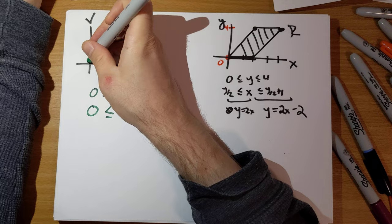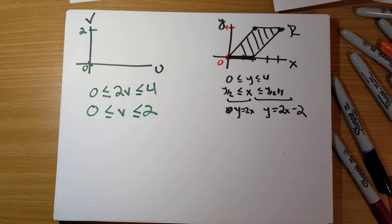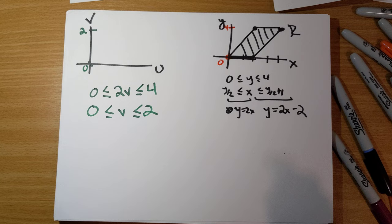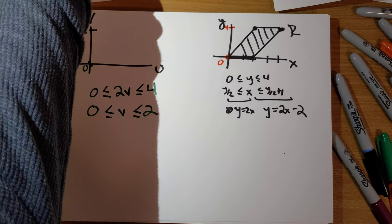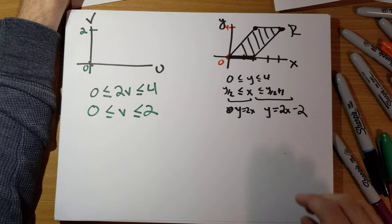So, our upper bound on V is going to be 2. Now, as for U, as for U, how do we figure out bounds on U? Well, let's replace in to, let's replace in here.